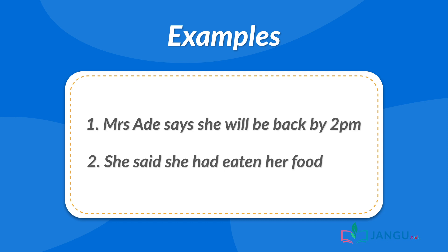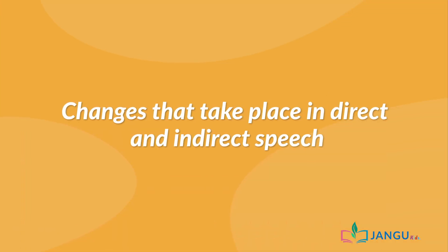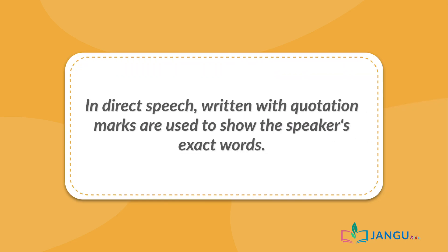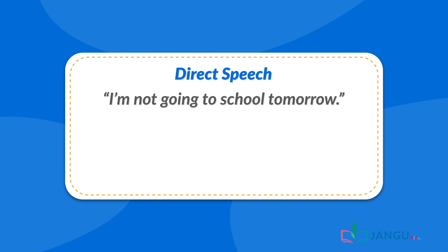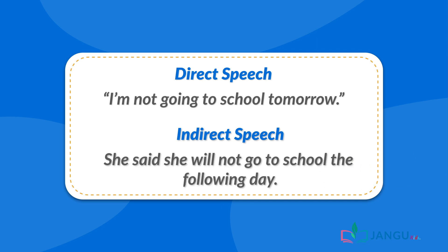Now, let's see some ways we can recognize the changes that take place in direct and indirect speech. Direct speech, written with quotation marks, is used to show the speaker's exact words. 1. Changing time expressions: Sometimes it's necessary to change the time expressions, especially when you are speaking about the past and the time reference no longer applies. For example — Direct speech: 'I'm not going to school tomorrow.' Indirect speech: She said she will not go to school the following day.